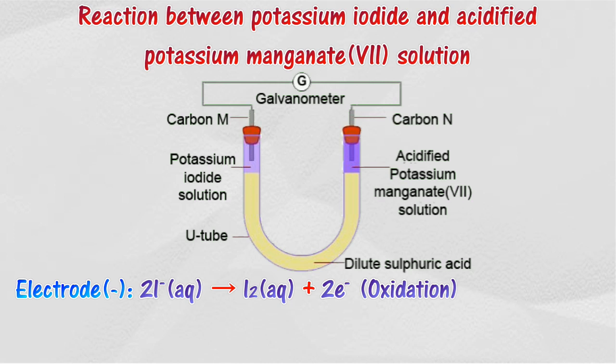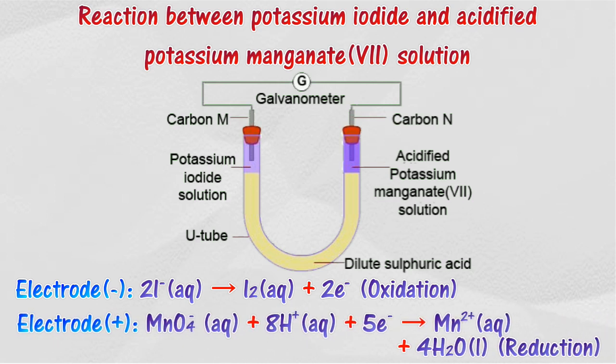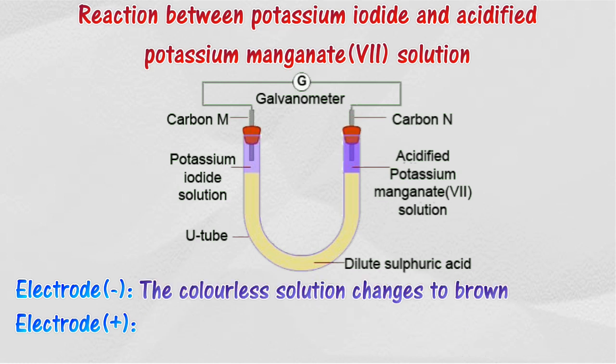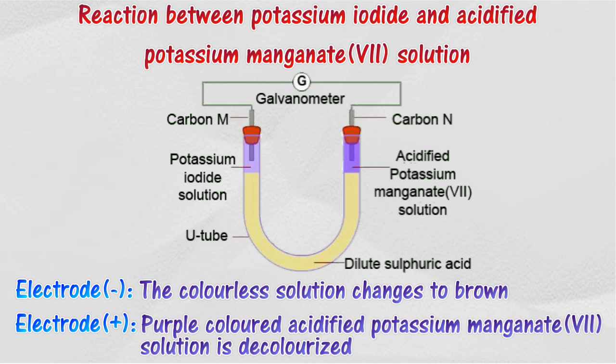Acidified potassium manganate(VII) solution undergoes reduction. The carbon electrode immersed in acidified potassium manganate(VII) solution acts as the positive electrode. The colorless solution of potassium iodide changes to brown, and the purple colored acidified potassium manganate(VII) solution is decolorized.